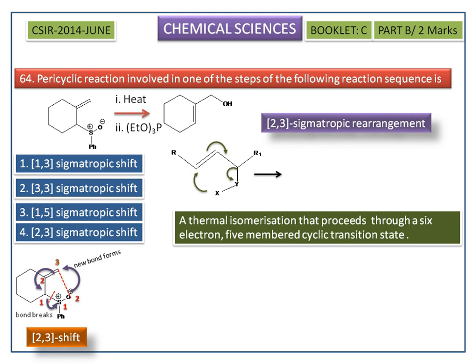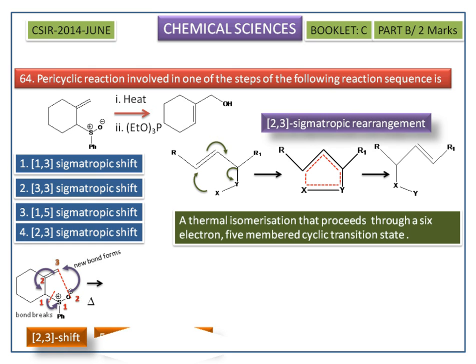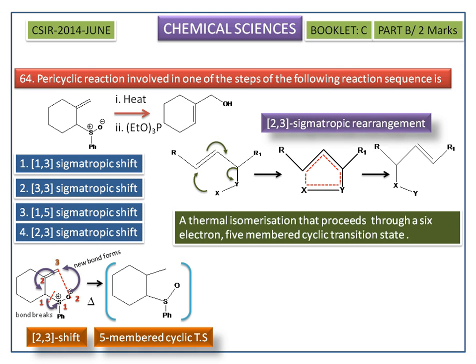This is a general example for the 2,3-sigmatropic rearrangement. Now we come back to our given problem. During the migration, it forms a 5-membered cyclic transition state.